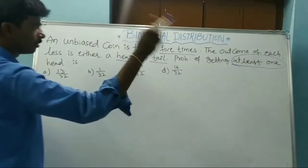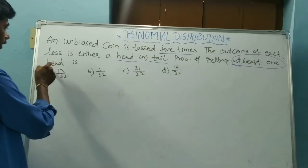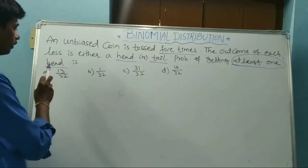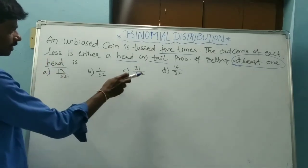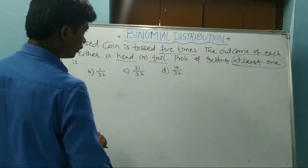See here, probability of getting at least one head, at least one, and see four options here. Now let's do the solution.